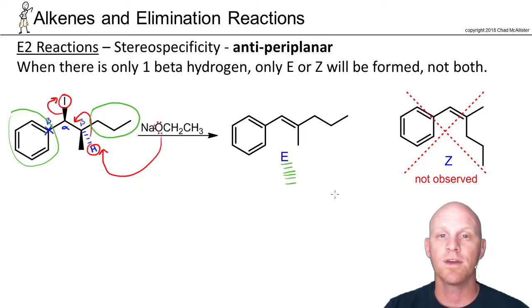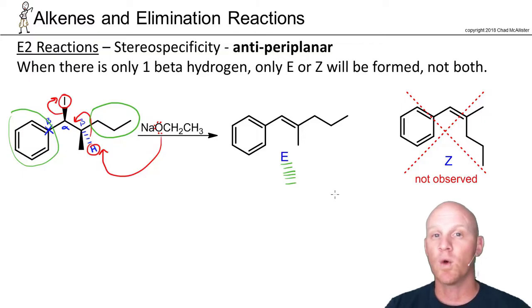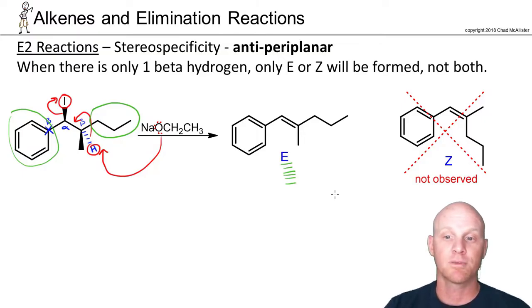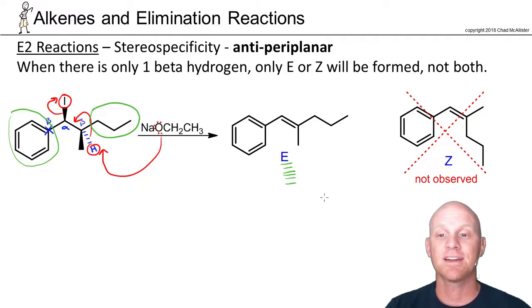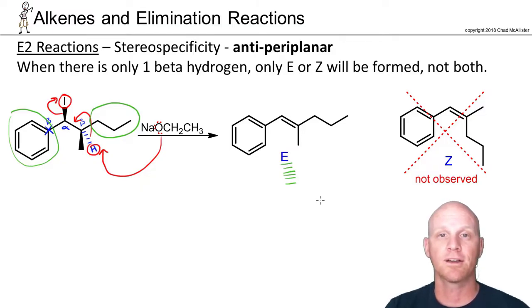When you've only got one beta hydrogen, you've got to be careful. If E and Z are possible, you're only going to get one and not the other, and it depends on the conformation. The key is getting that hydrogen antiperiplanar to the leaving group and then getting it locked in that conformation as an alkene.